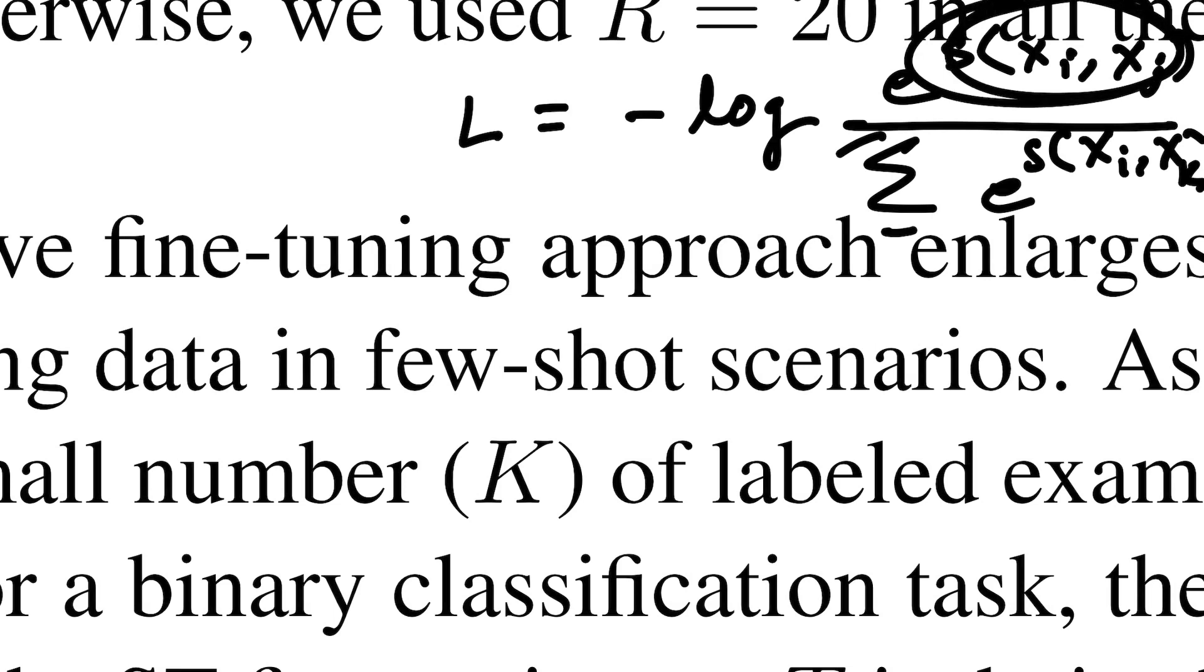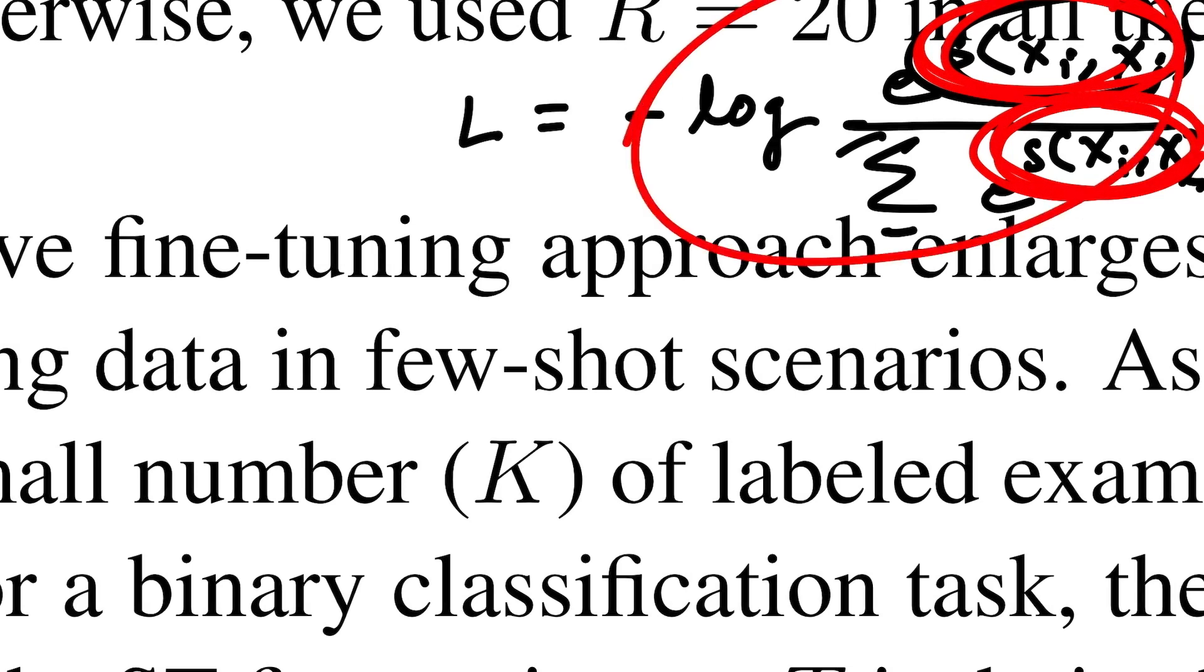The overall idea is you need to maximize this upper term and minimize the similarity between two samples from different classes, which means minimizing the e to the power that's in the denominator. Once this pattern is met, the overall loss will decrease.